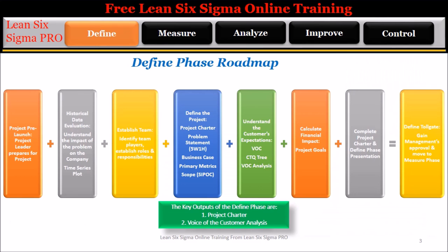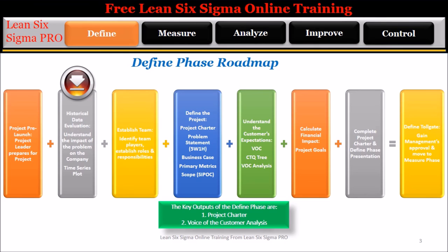The Define Roadmap is a summary of all of the steps required to complete the Define phase. Step 1: Project Pre-Launch — the Project Leader prepares for the project. Step 2: Historical Data Evaluation — understand the impact of the problem on the company. A time series plot is used to understand the trends of the data.